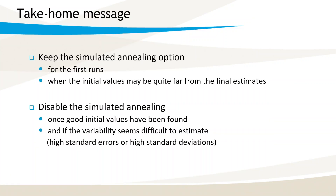So the take-home message is: keep the simulated annealing option for the first runs to help convergence to the global maximum, especially when the initial values may be quite far from the actual estimates. As a second step, you may disable the simulated annealing once good initial values have been found and if the variability seems difficult to estimate and you wish to estimate it more precisely — for example because of high standard errors for the omega parameters, or also high values for the omegas.